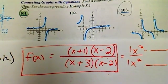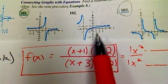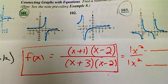well all the zeros on top, excluding the ones that cancel to make a hole, should correspond to x-intercepts, right? So that's kind of what we're looking for.